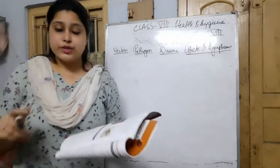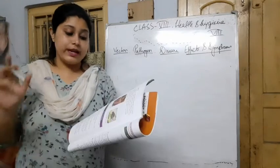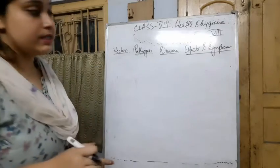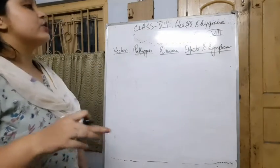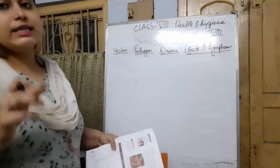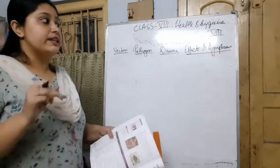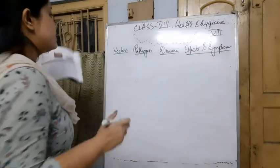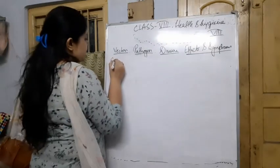For today, the first disease vector is the Culex mosquito. Till now we were talking about the Aedes mosquito, but today we move on to the Culex mosquito.